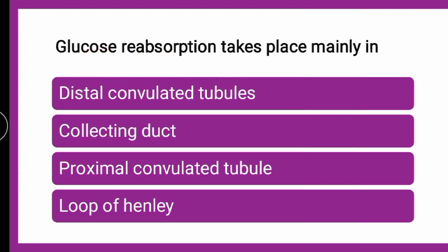The next question is: glucose reabsorption takes place mainly in dash — whether it is the distal convoluted tubule, collecting duct, PCT (proximal convoluted tubule), or loop of Henle. You can put your answer in the comment section, and later you can verify your answer.